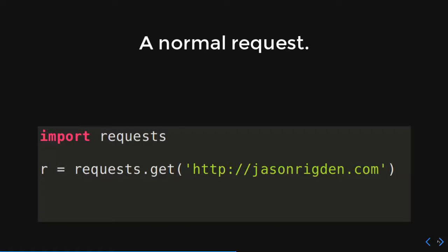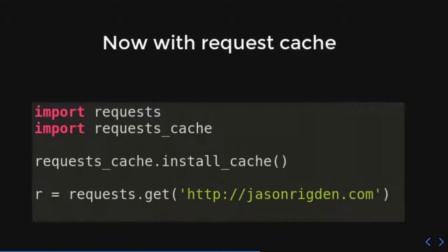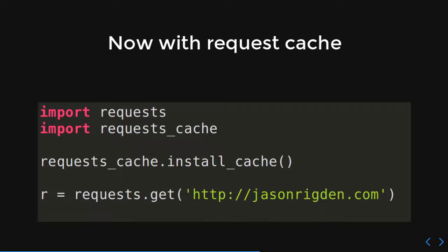Here is a normal request: import the requests library, call requests.get, and give it a URL — we're going to my website. Here is the same thing with requests-cache: we import requests, then we import requests_cache, then we initialize the cache, and then we do our get request again. Every time we call this again, it's not going to hit the wire — it's not going to go to the servers that jasonrigdon.com is sitting on. It's just going to go internally.